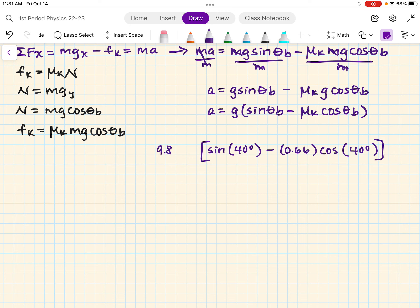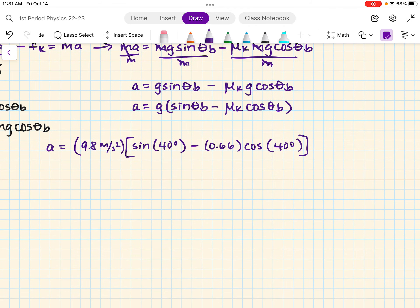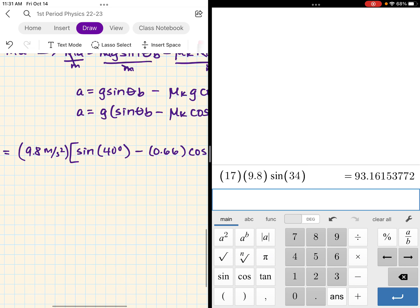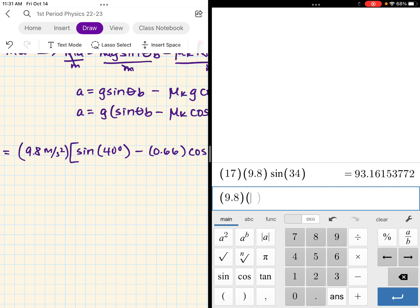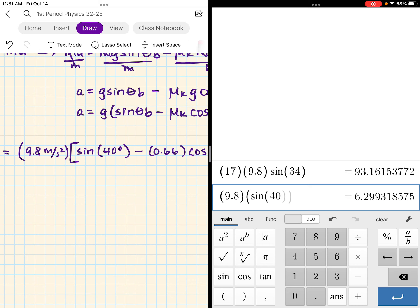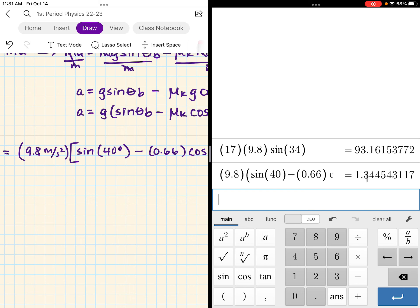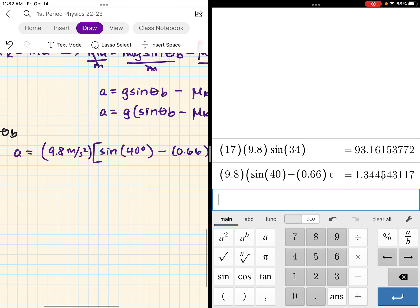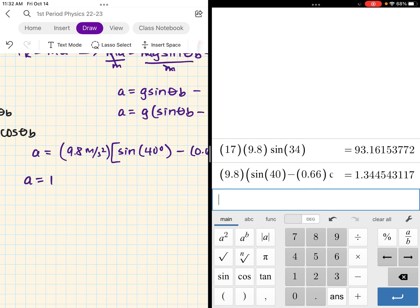So this would be 9.8 meters per second squared. Let's try that parenthesis again. And that is equal to acceleration. Sorry, it's kind of messy. Let's go to decimals. So we have 9.8 times the sine of 40 minus 0.66 cosine of 40 degrees. And, yeah, there you go. So the acceleration is 1.3445. Let's round to the nearest thousandth. So 1.345. That is our acceleration. Acceleration is equal to 1.345 meters per second squared.